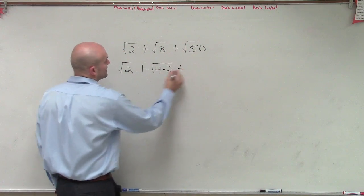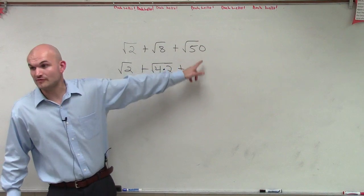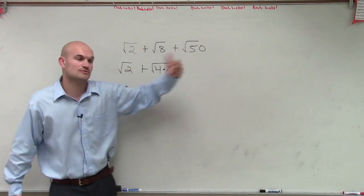It has to be the largest square number. And 4 is my largest square number. Now I look at 50 and say, what's the largest square number that divides into 50? 25.